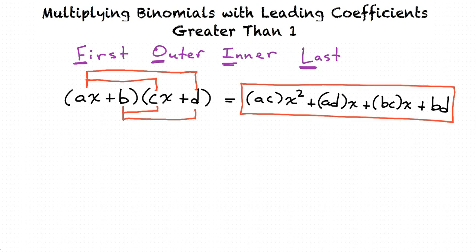Let's work on an example. Multiply 5c plus 2 times 7c plus 3. In order to multiply these two binomials, we need to use the FOIL method. So we are first going to multiply 5c and 7c. This results in 35c squared.